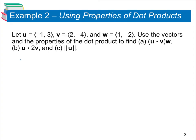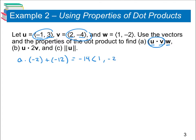We have a couple more examples. We need to find the dot product of u and v, then multiply that result by vector w. First, let's find the dot product of u and v: negative 1 times 2 is negative 2, plus the second times the second gives negative 12. Negative 2 plus negative 12 is negative 14. Now we take negative 14 and multiply it to vector w, which is (1, negative 2). Distributing: negative 14 times 1 is negative 14, and negative 14 times negative 2 is 28.